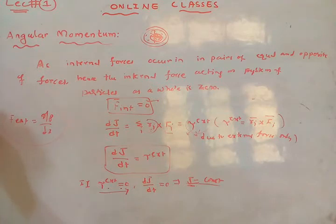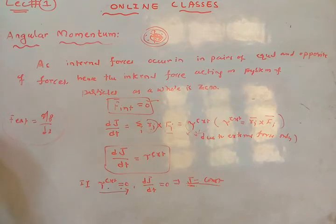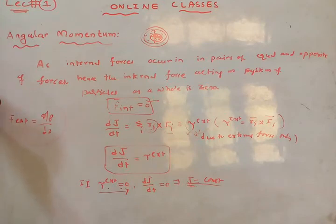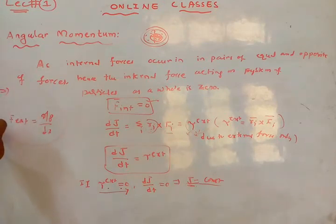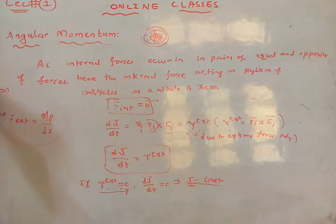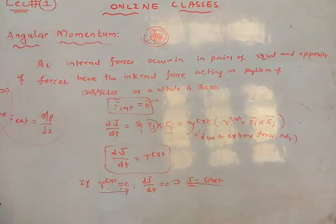To summarize: F_external equals dp/dt, and torque external equals dJ/dt. In the first theorem, if F_external equals zero then p is constant. In the second theorem, if tau external equals zero then J is constant. These are the two theorems we have completed. Now I am moving to the third theorem.